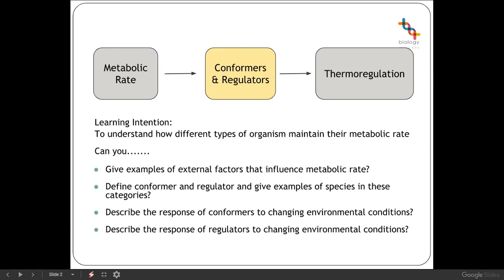What we're looking at today is to be able to understand how different types of organisms maintain their metabolic rates. This includes giving examples of external factors that influence the metabolic rate, defining what we mean by a conformer and regulator and giving examples of species in these categories, and describing the response of conformers and regulators to changing environmental conditions.